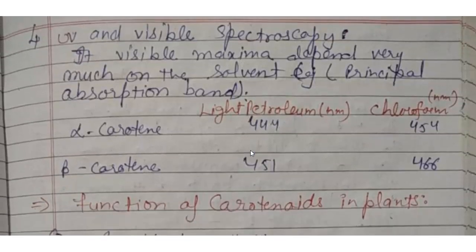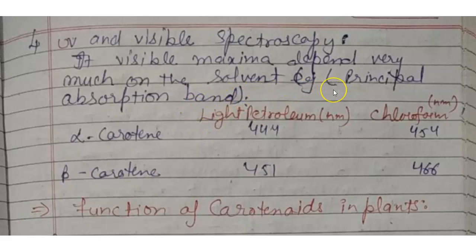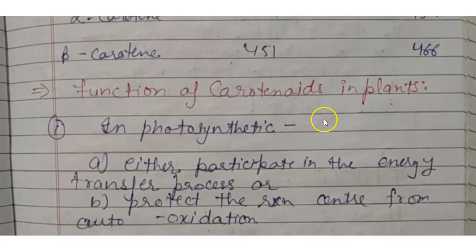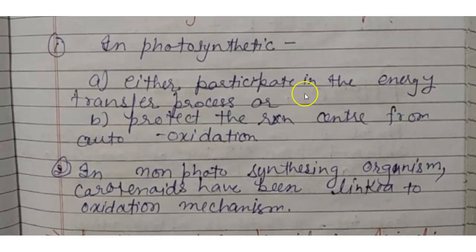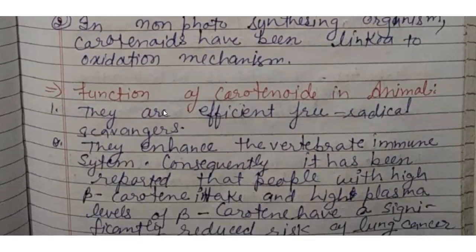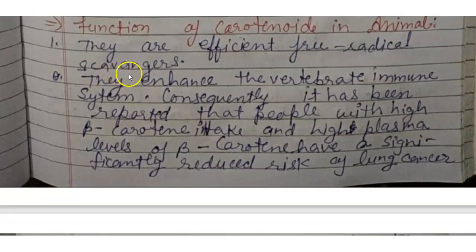For UV and visible spectroscopy, the visible maximum depends very much on the solvent used. The principal absorption bands for light petroleum and chloroform solvents are characteristic for each carotenoid. The function of carotenoids in plants is in the photosynthetic energy transfer process or to protect the reaction center from auto-oxidation. In non-photosynthetic organisms, carotenoids have been linked to oxidation mechanisms. In animals, carotenoids are efficient free radical scavengers.